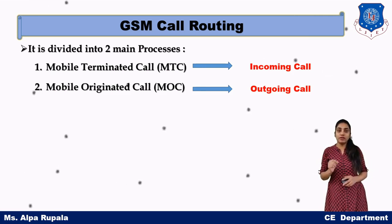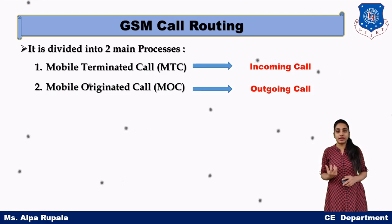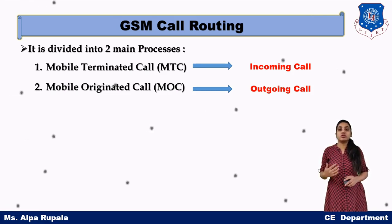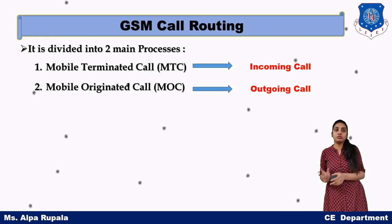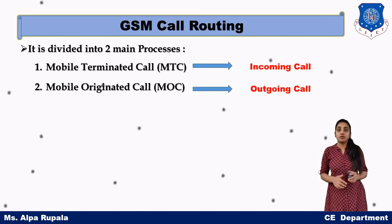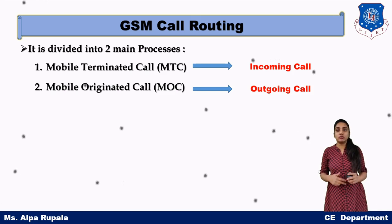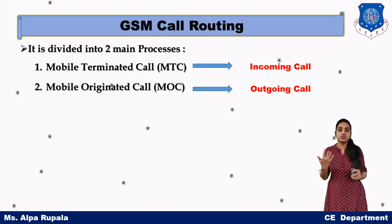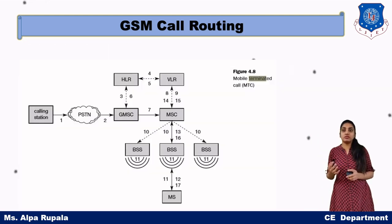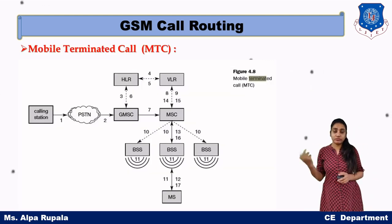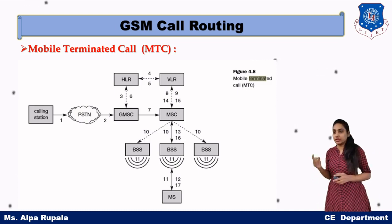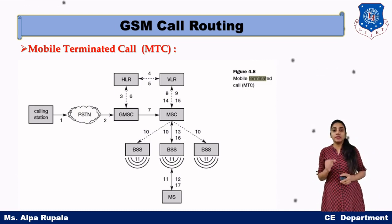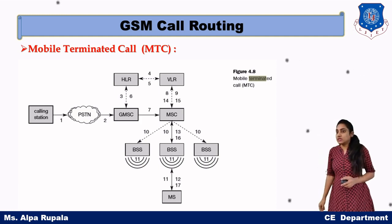Whenever a mobile terminated call occurs, this process is very complex because the caller doesn't know whether you are in a home network or a foreign network. But for a mobile originated call — that is, an outgoing call — there is no such complexity of identifying whether we are in a home or foreign network; we are directly just calling. We will learn both calling mechanisms in detail.